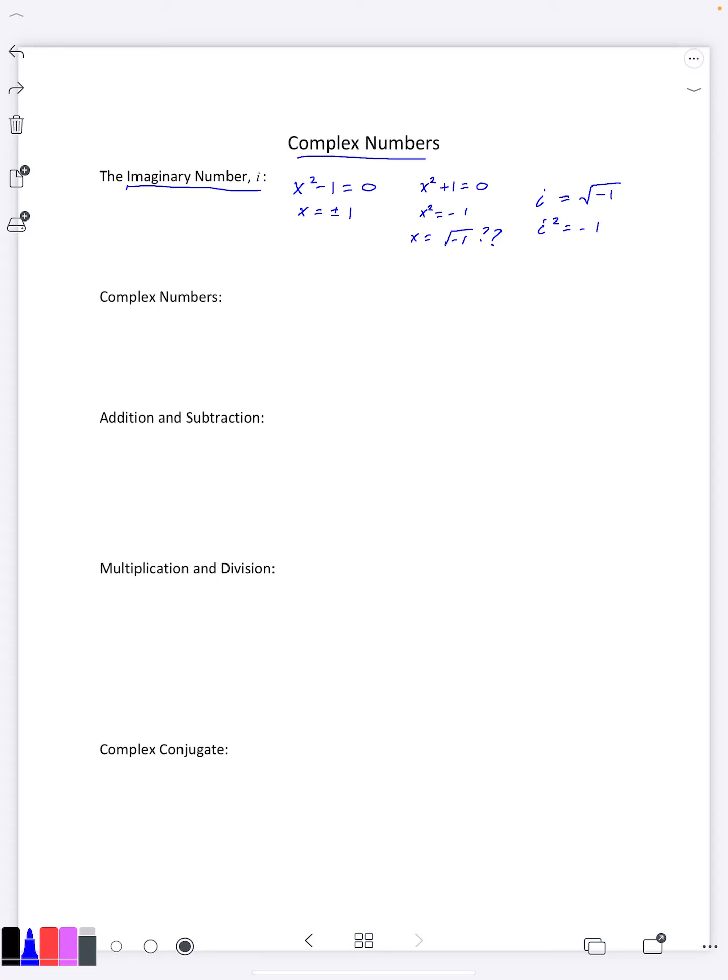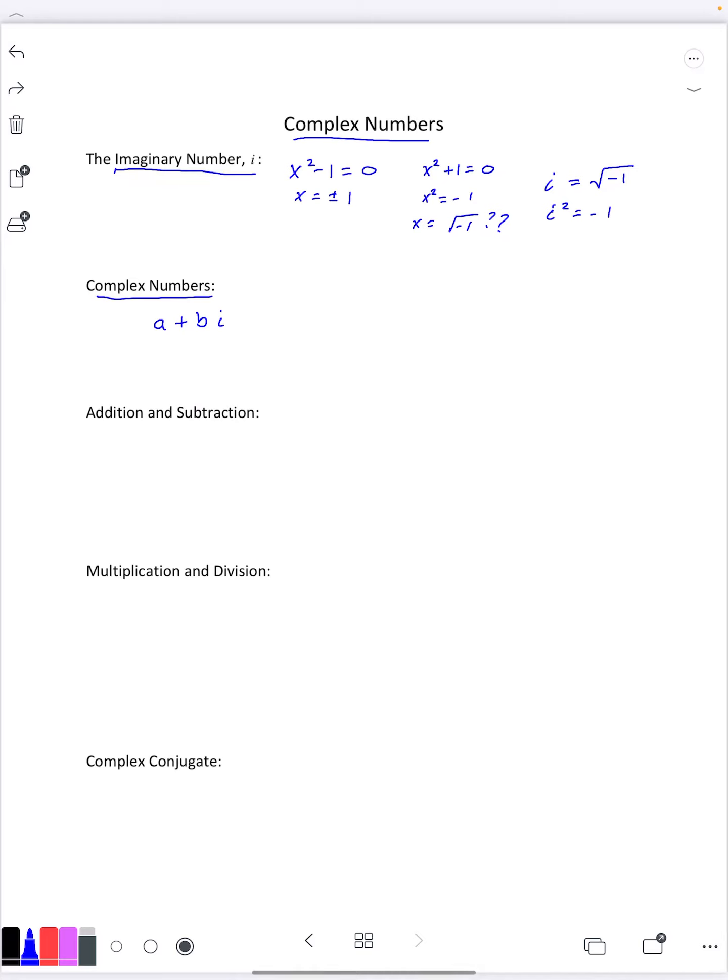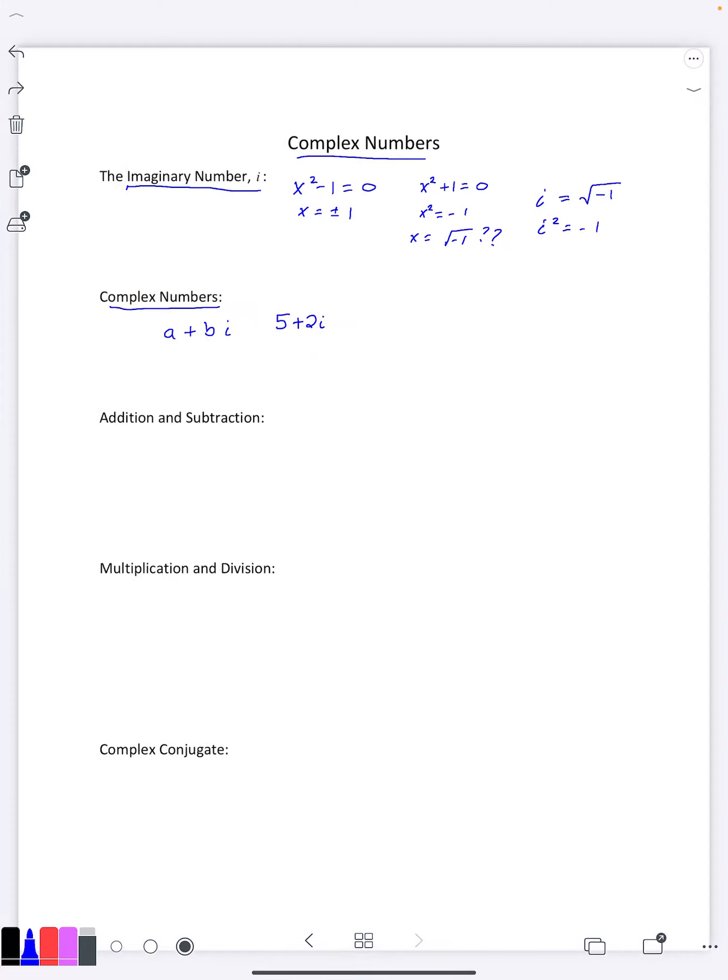So what are complex numbers? Complex numbers are anytime you have a real number a plus a real number times i, b times i. So for example, if I did 5 + 2i, that would be a complex number. I have the real part which is the 5, the imaginary part which is 2. I could also have 3 - 7i. That would be a different complex number.